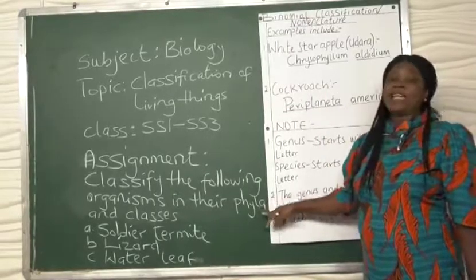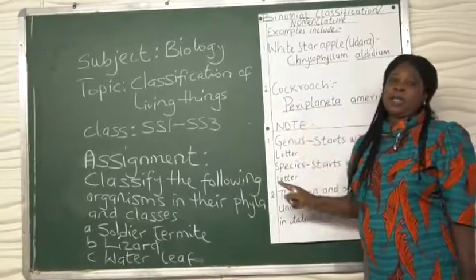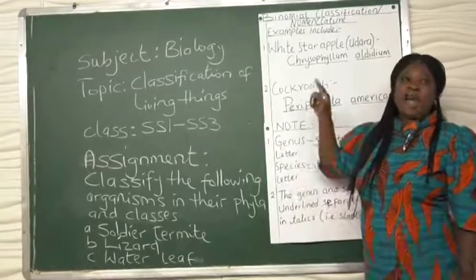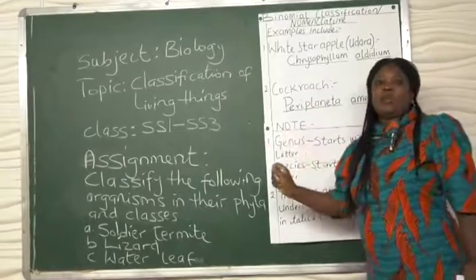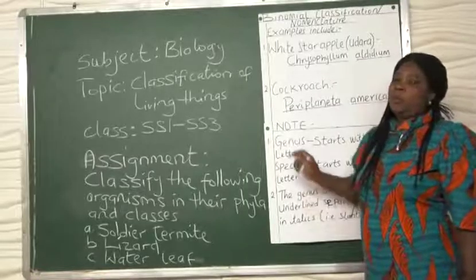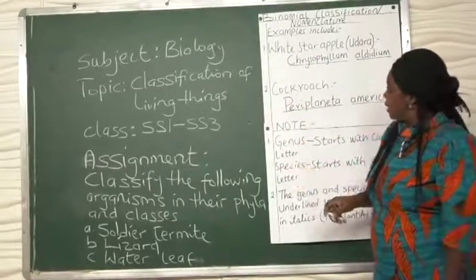When you see phyla, it means you are asked to classify more than one organism. So in your own classification, you will not write phyla for one organism. You write phylum, then write a particular organism and the class of that organism. But if you will use tabular form...